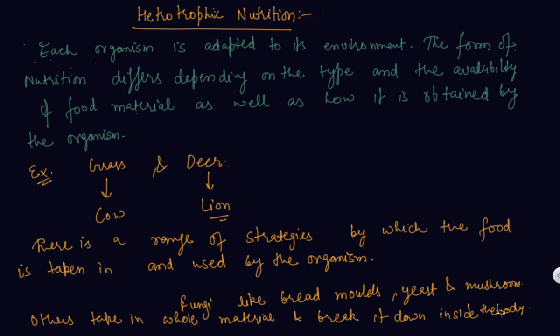This is heterotrophic nutrition. How organisms derive their food depends on the type of organism and type of environment they are living in.